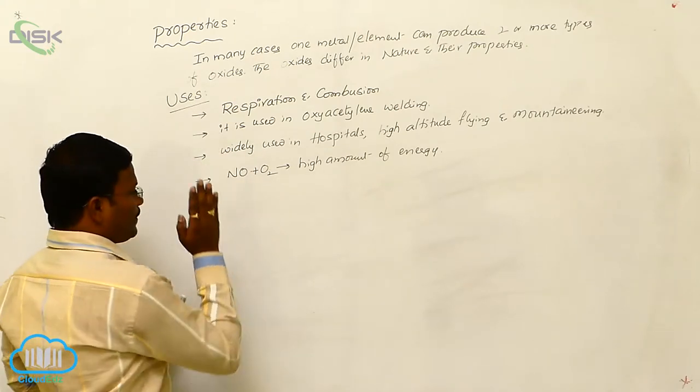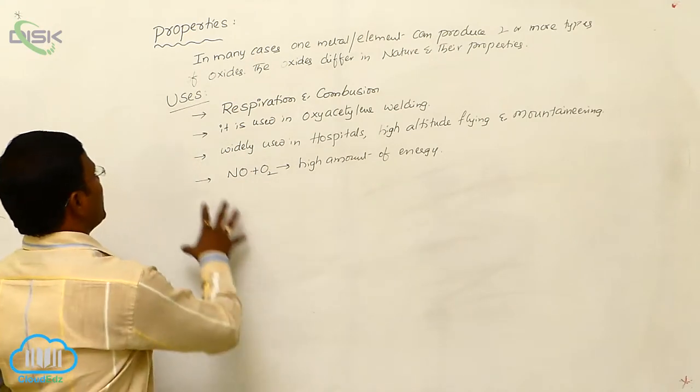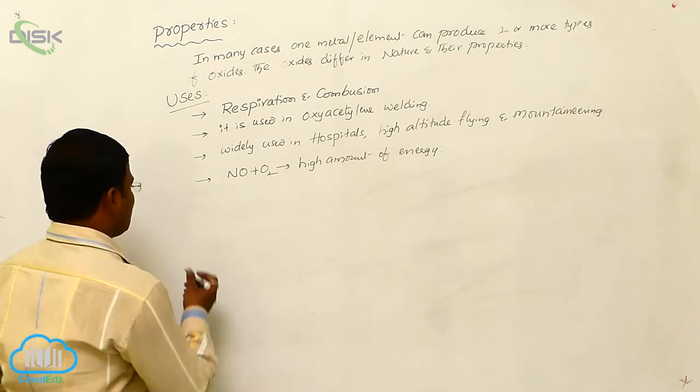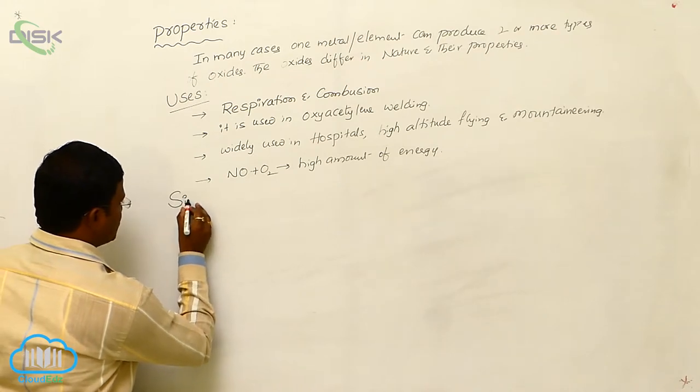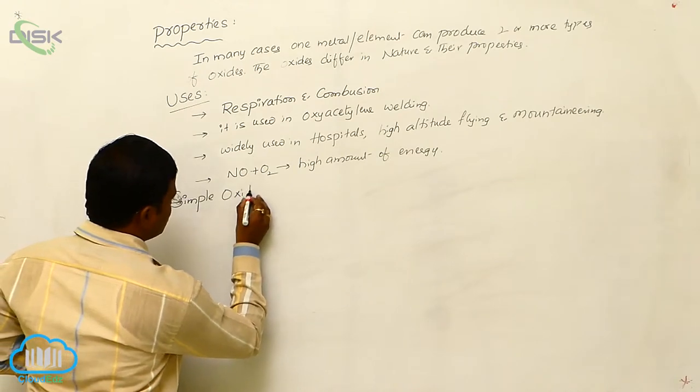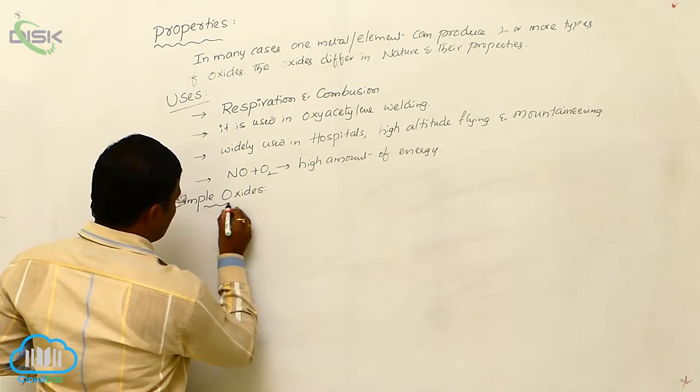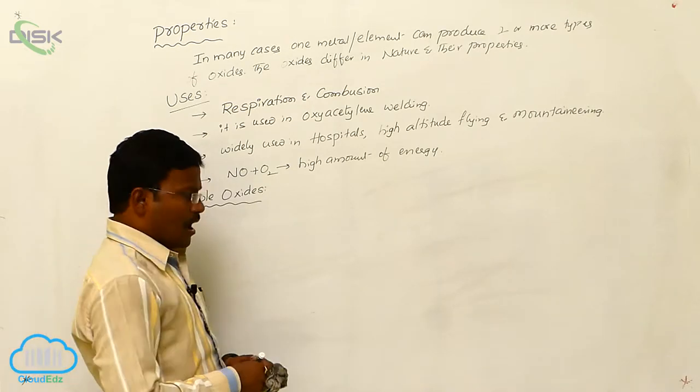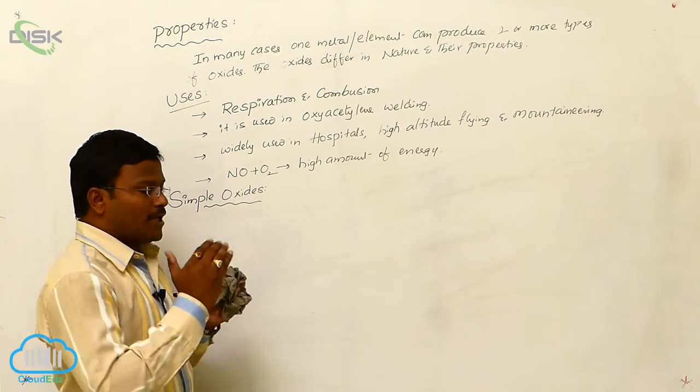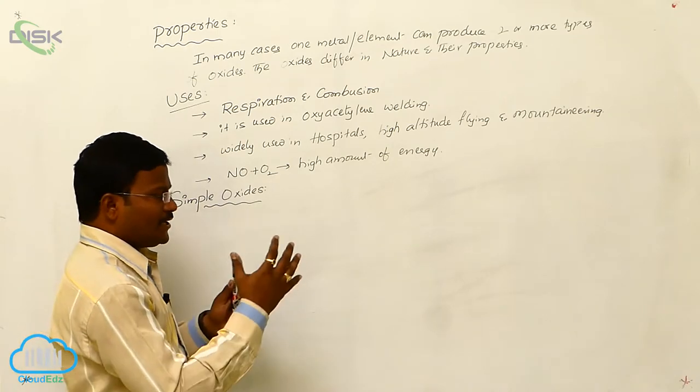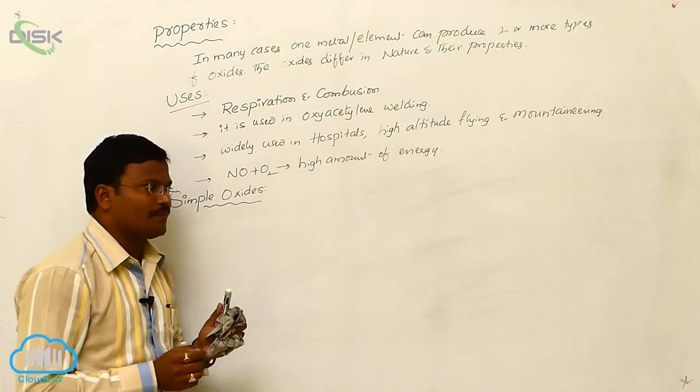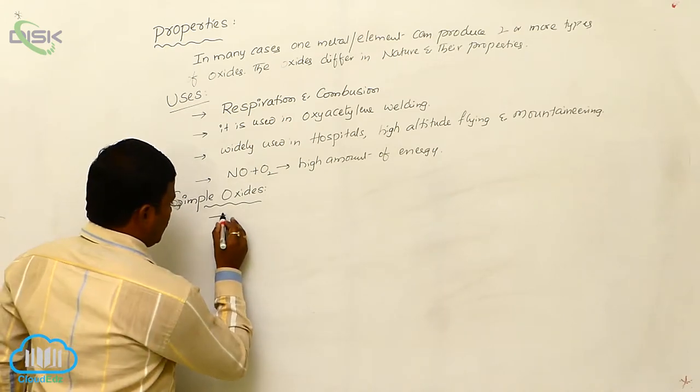So, this is about preparation, properties and uses of dioxygen. After this, the next concept is simple oxides. What are oxides again? Oxygen by reacting with metals and non-metals, they produces their derivatives. The resulting products are called as oxides of those metals.